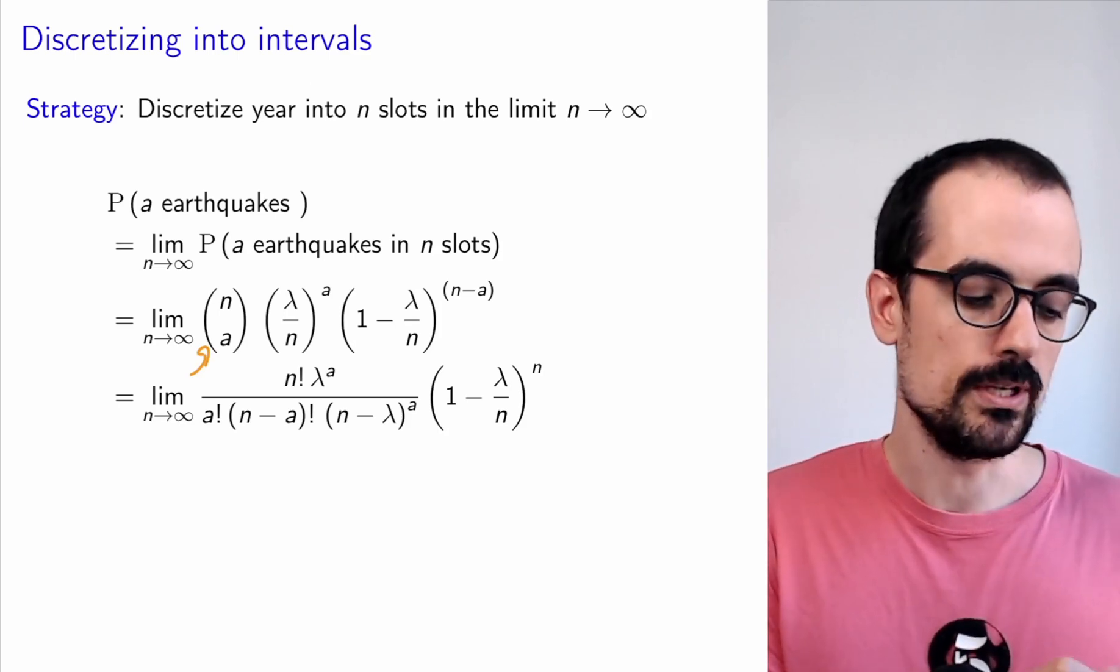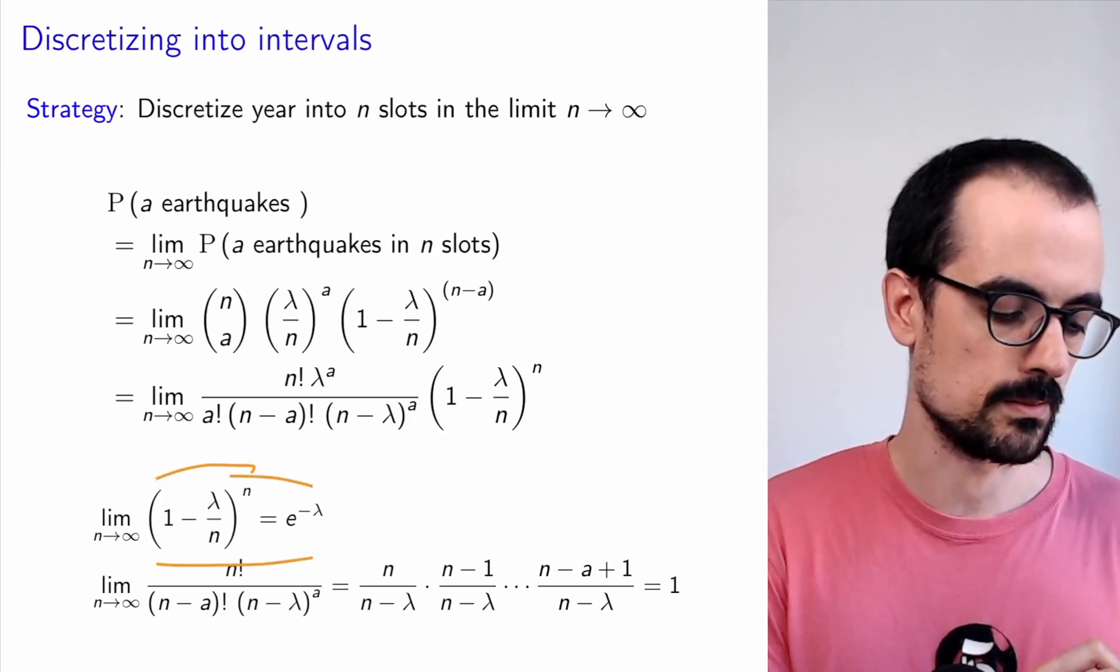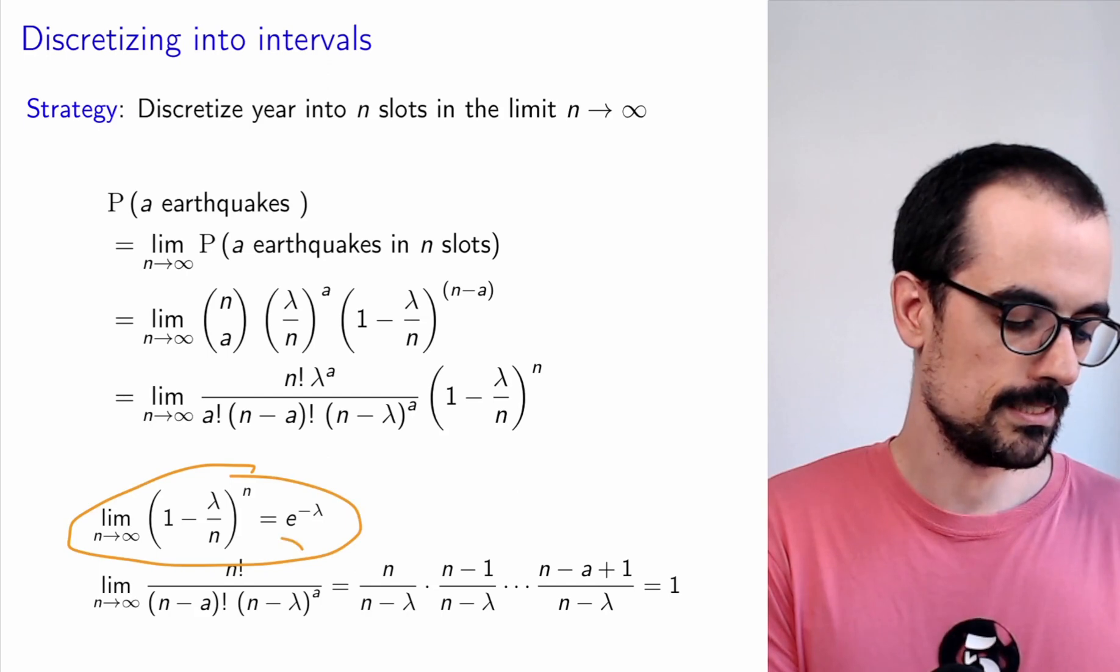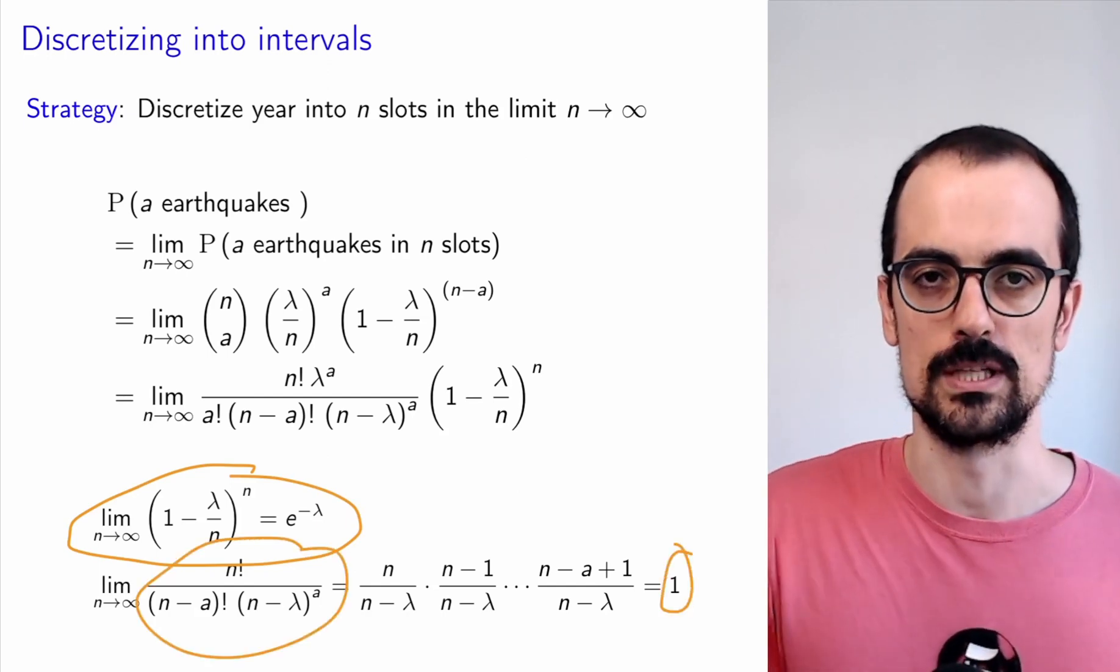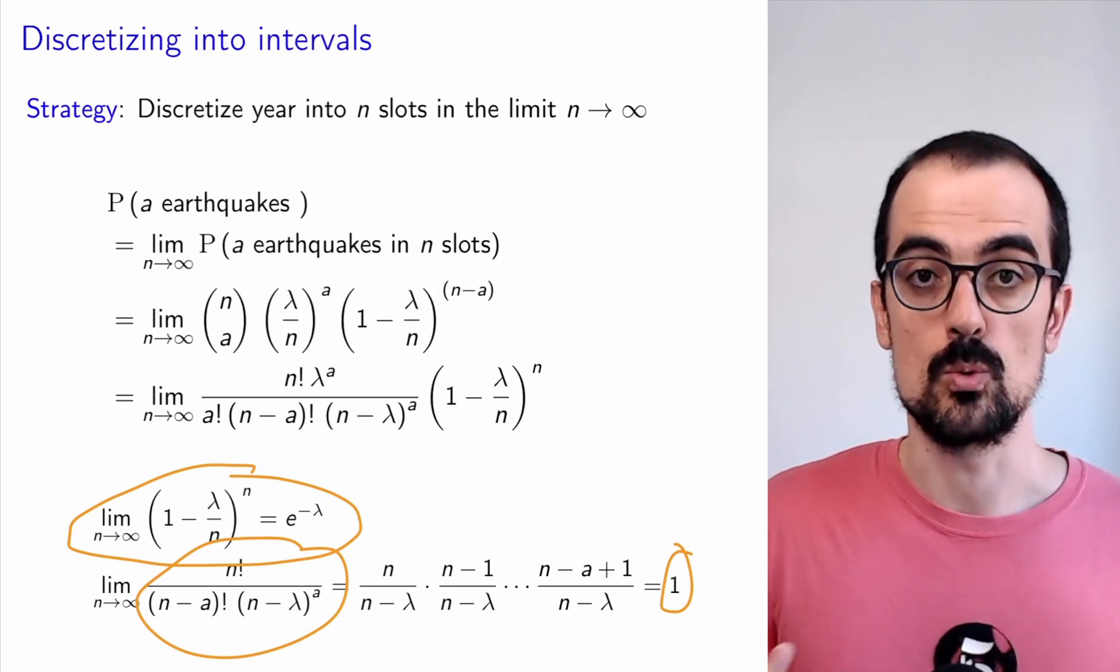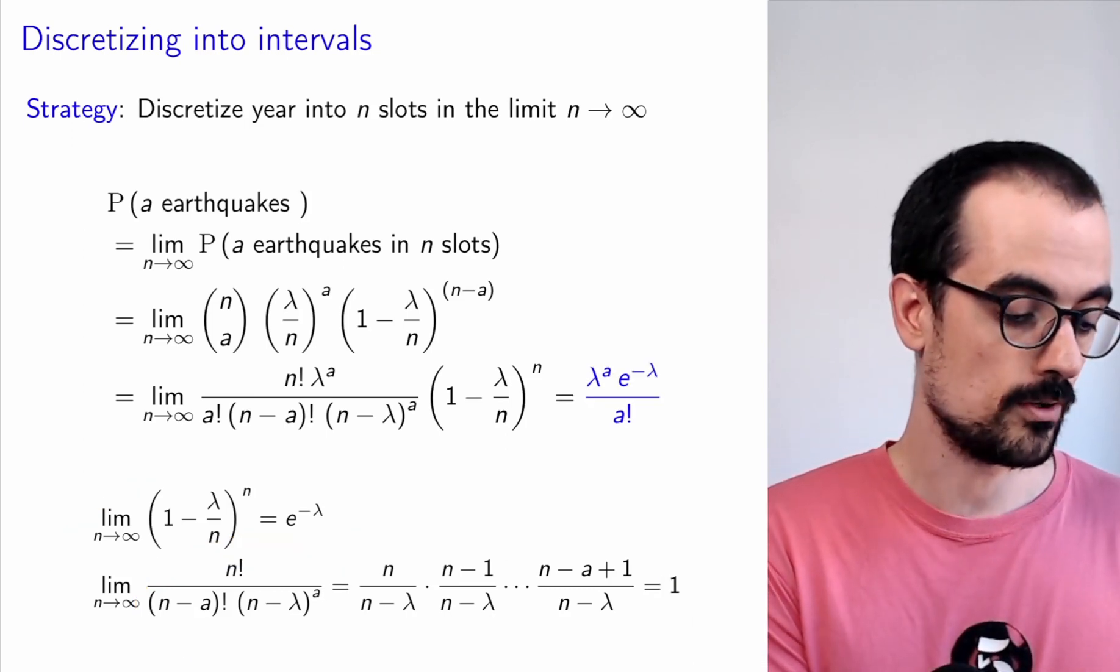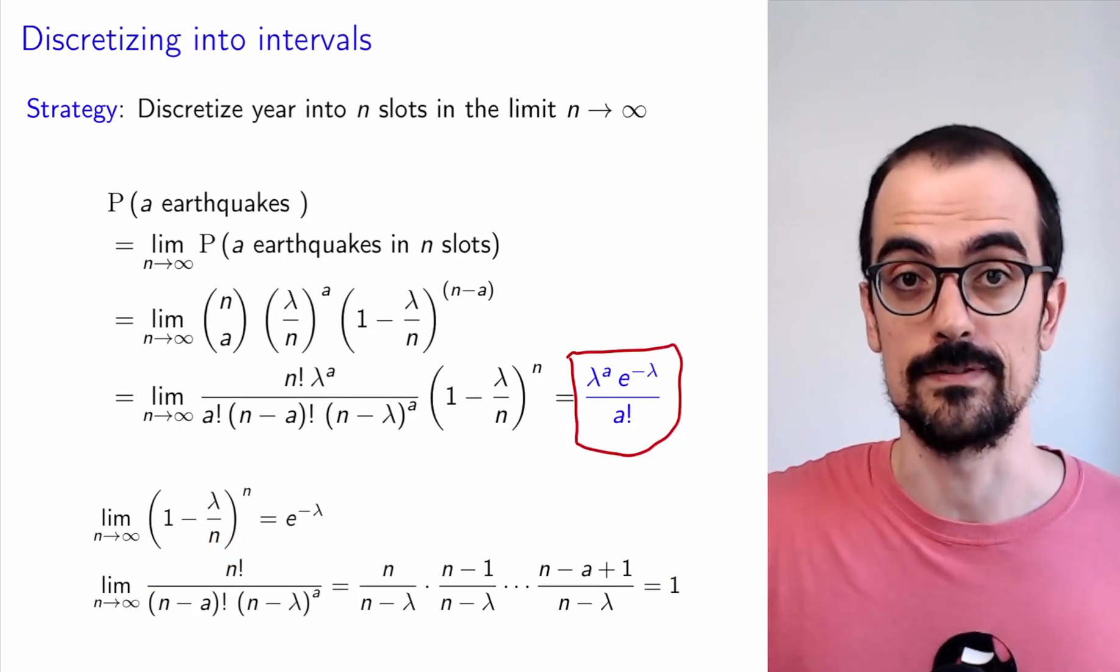We just have to expand the binomial coefficient and do a little bit of math. This is not too interesting. You need to know a couple of things. You need to know that this limit is equal to the exponential of minus lambda and that here this limit is equal to 1 because essentially things cancel out when you take N to infinity. So we end up with this formula for the probability of observing A earthquakes once we have taken N to infinity.